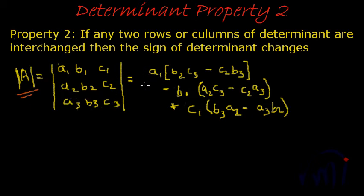The standard expansion by row 1 of this determinant A is given here, which is A1(B2C3 minus C2B3) minus B1(A2C3 minus C2A3) plus C1, that is the third element, (B3A2 minus A3B2). This is your standard expansion.